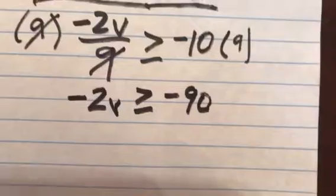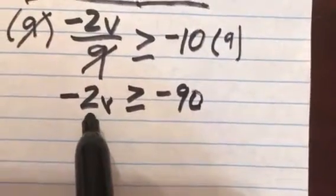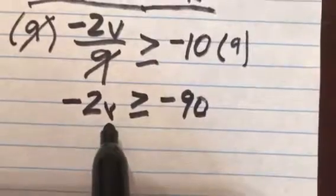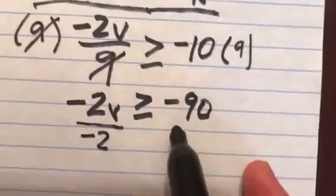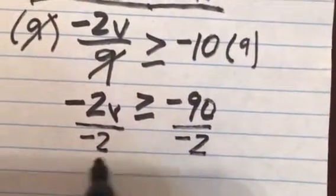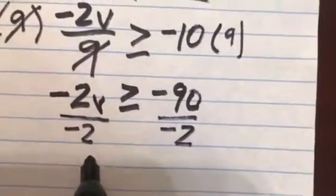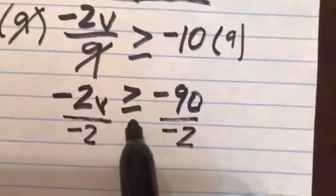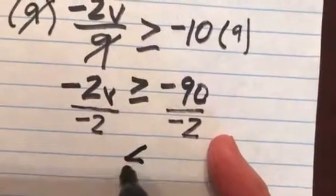Now I want to get the negative 2 out of there. It's being multiplied by v, and so I'd like to divide both sides by the negative 2. But remember, whenever I multiply by a negative, when I'm using inequalities, or divide by a negative, I have to reverse this inequality symbol. So in my next step, I'm going to write less than or equal to.